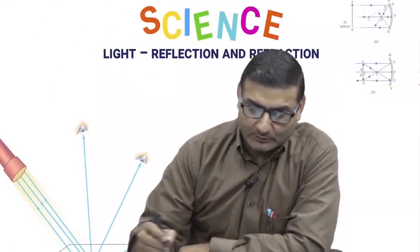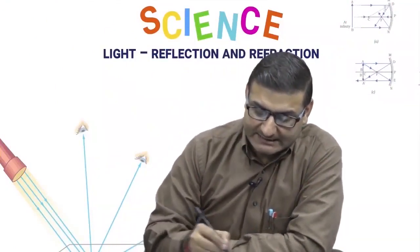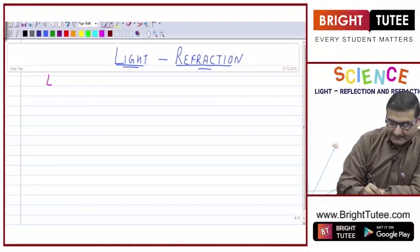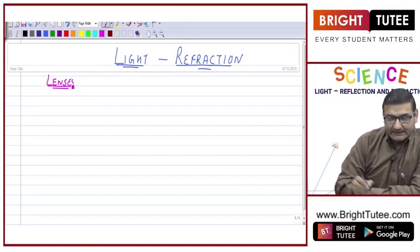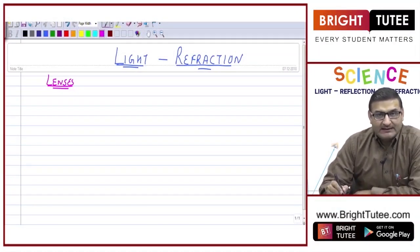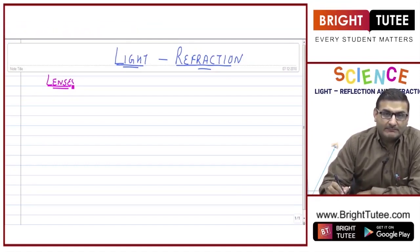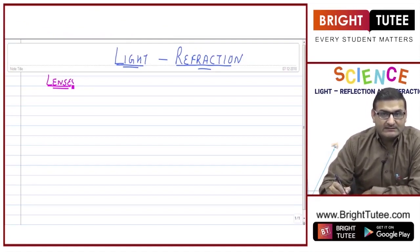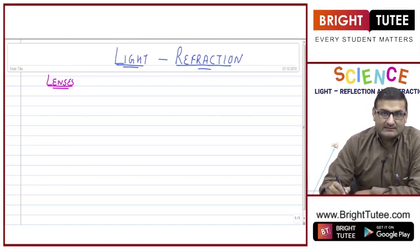Hello dear students, today we will be studying lenses in our chapter on light and refraction of light. Lenses are transparent materials which are bound by a particular surface. It may be spherical on both sides, or it may be one spherical surface and one plane surface.